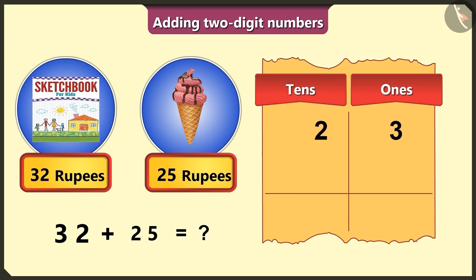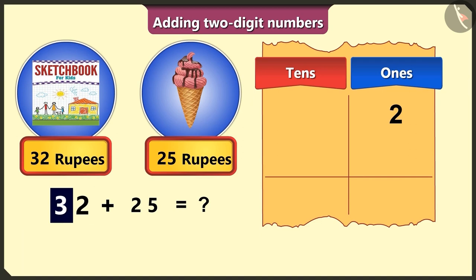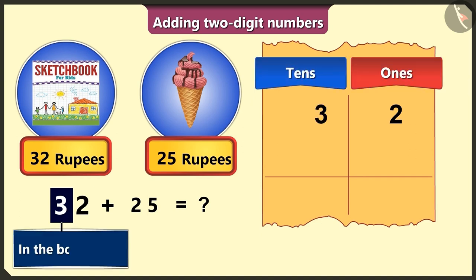You did the opposite, Pillu. From 32, in a two-digit number, the last digit is always written in the ones box and the first digit in the tens box.